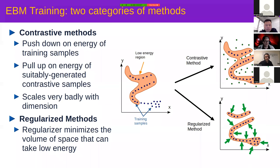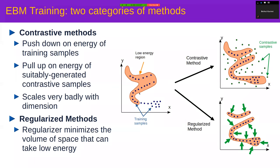There are two ways to train an energy-based model, and this applies to probabilistic models as well. The first way is contrastive methods: imagine a low-energy region symbolized by a pinkish area, with data points as blue dots. Right now the low-energy region is not good — some low-energy regions have no data points in them and some data points aren't given low energy. We want to push down the energy where we have points and push it up where we don't.